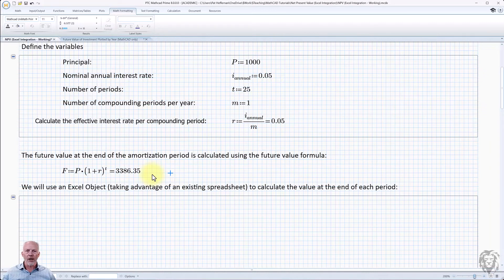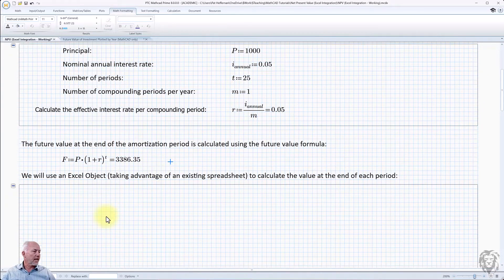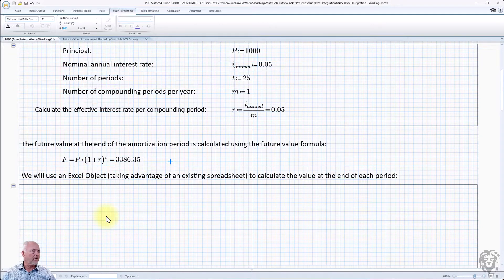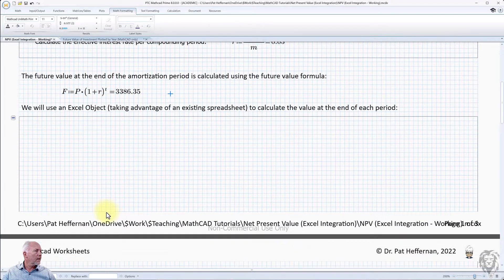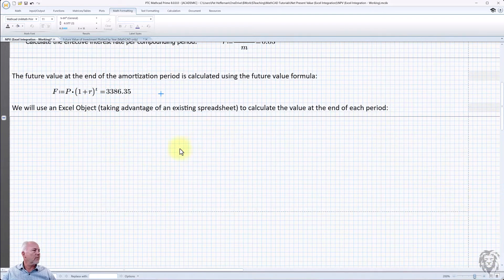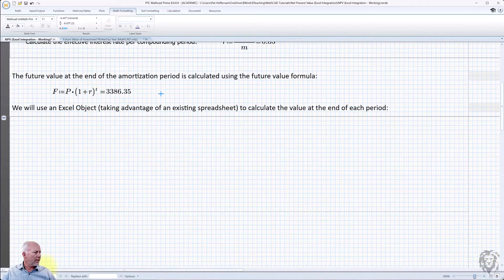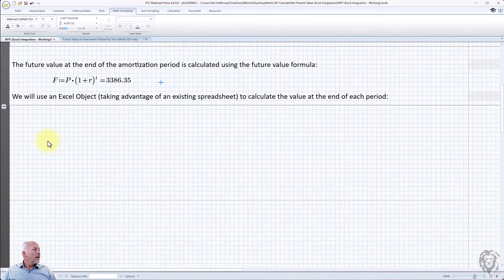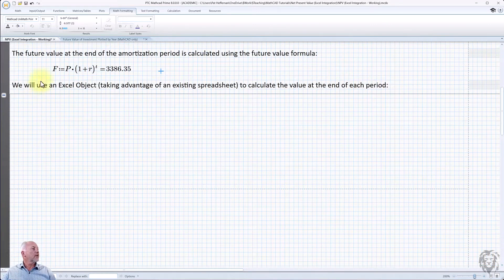And so we're going to use the Excel object to bring in and use those calculations and then export them back into here. So one of the things I'm going to do, this gets a little cumbersome looking at the page view. So I'm going to separate that out or split that out. And I'm going to scroll up.